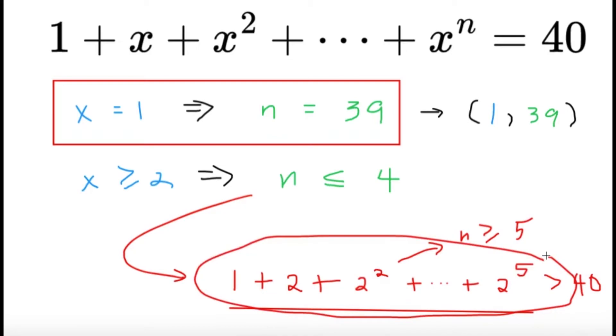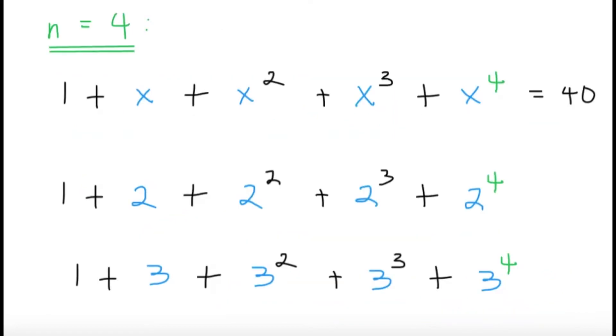So having the bound is now nice because all we have to do is just iterate over all the possible values of n. So starting with n equals 4. So we want to find x such that 1 plus x plus x squared plus x cubed plus x to the fourth is equal to 40. Alright, we can do some bounding here. By the way, the left-hand side of the equation, that's increasing in the interval from 1 to positive infinity. We can use this fact to get the solutions to the problem.